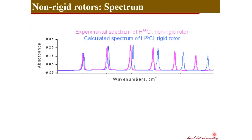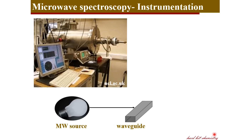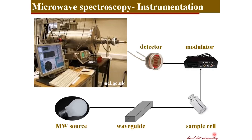Now we know how to use the rotational spectrum to determine the unknown identity of a molecule, obtain masses from bond length or bond length from masses, and so on. Let's see how a microwave spectrometer looks. The key components are: a microwave source, whose radiation passes through a waveguide into the sample cell. The sample absorbs specific components of the microwave radiation according to its energy transitions; the transmitted radiation passes through a modulator, then a detector, and finally the data are processed by a computer to yield a spectrum.